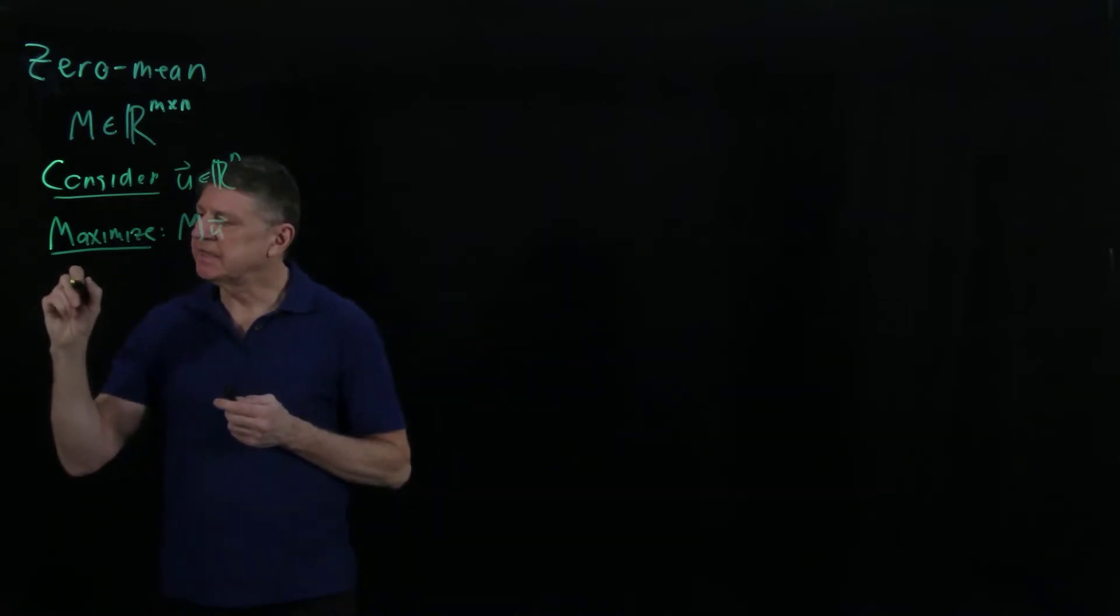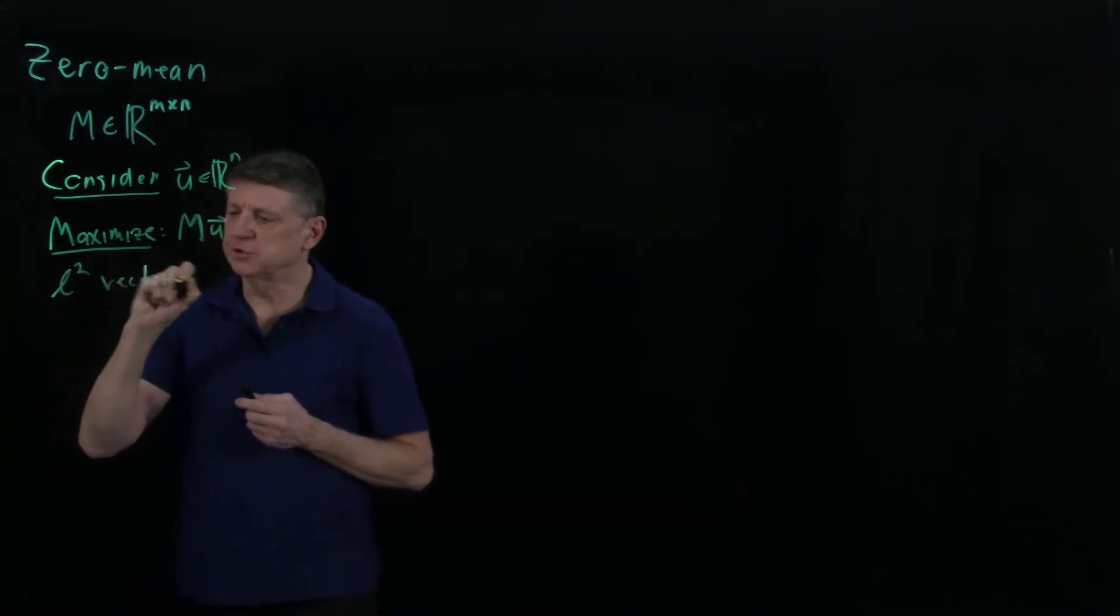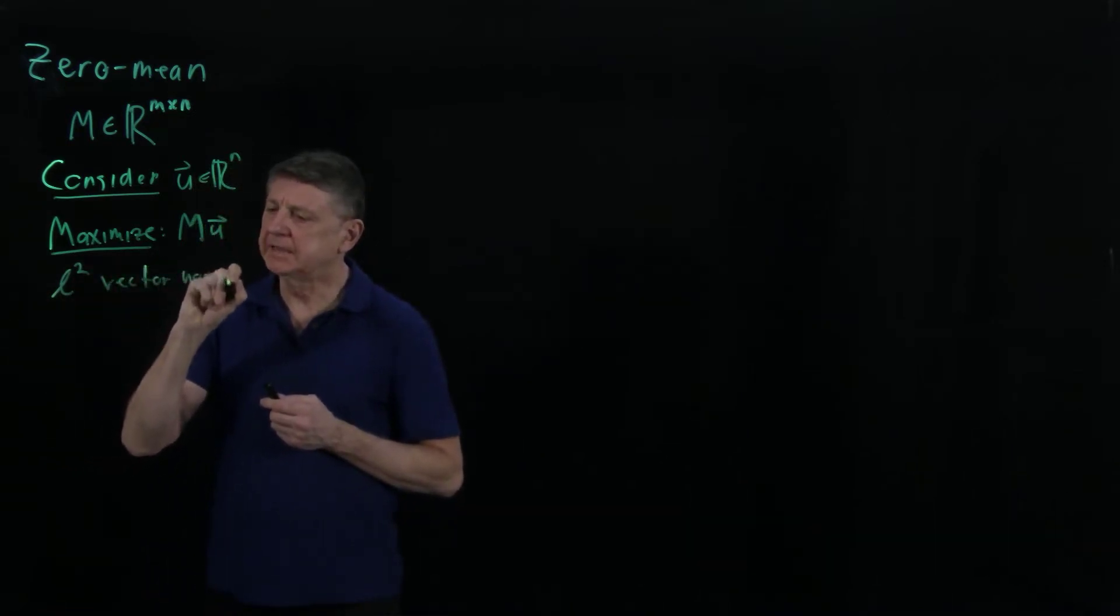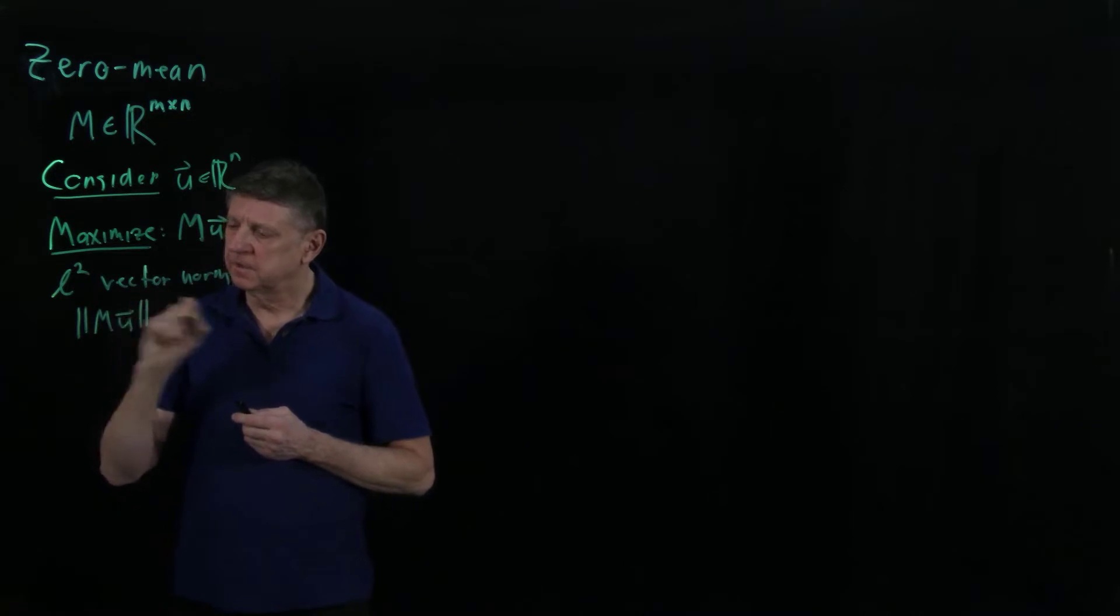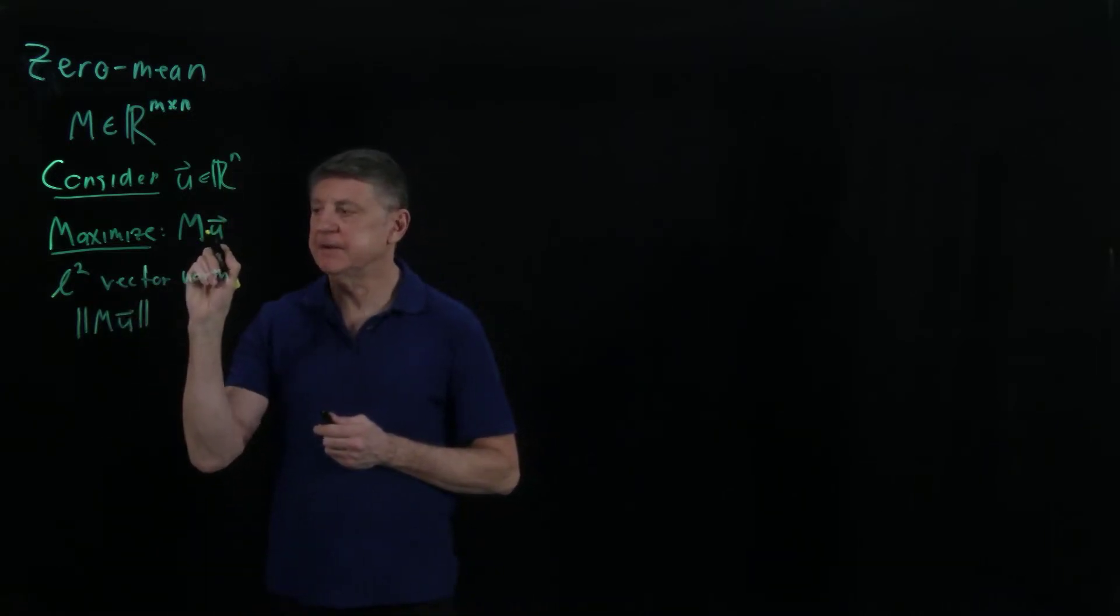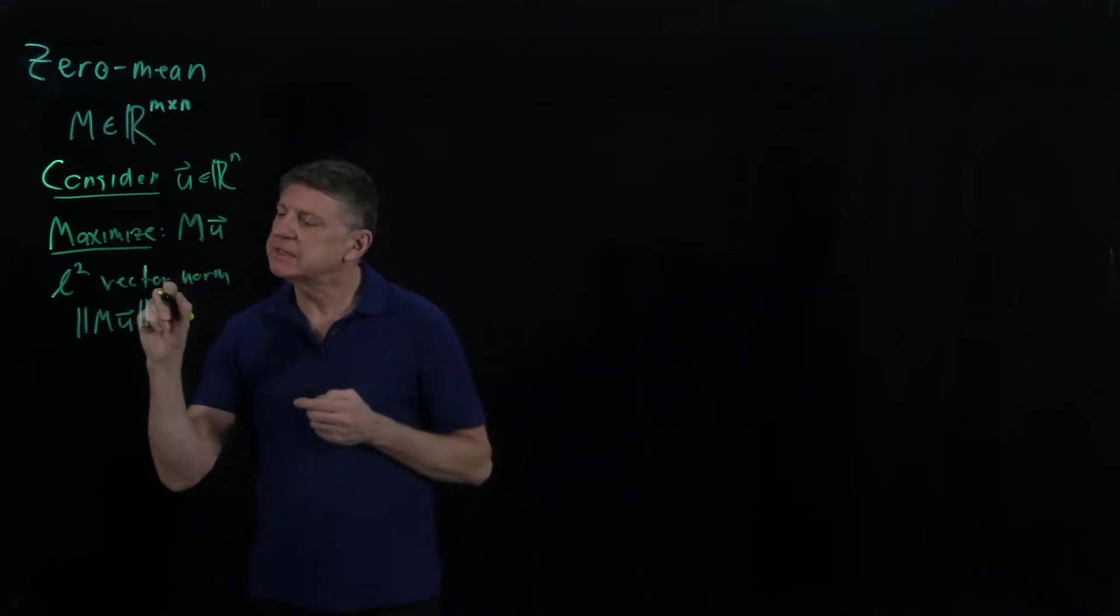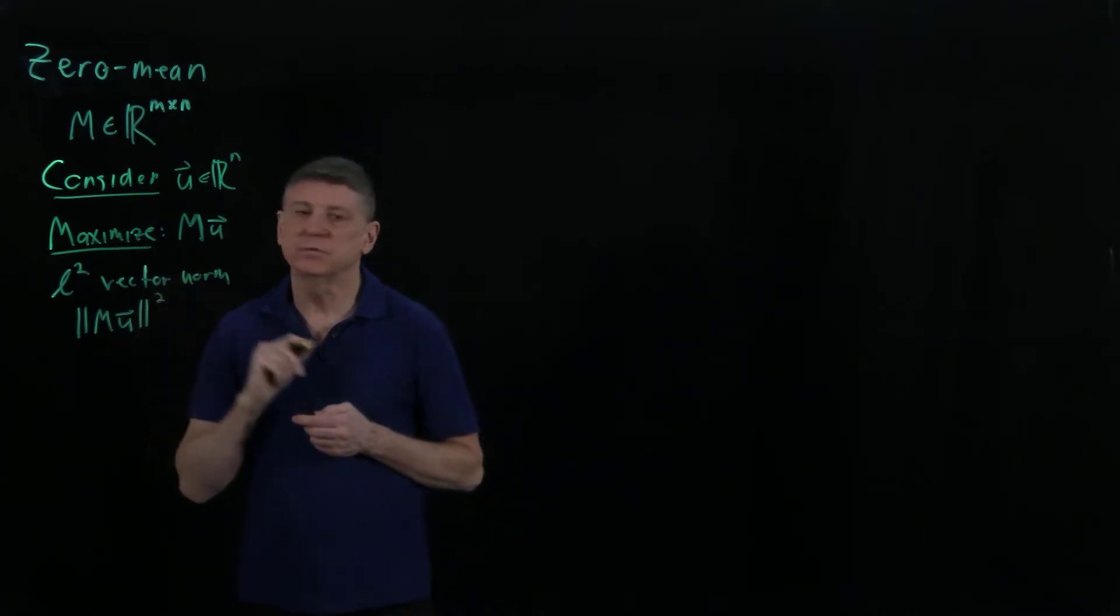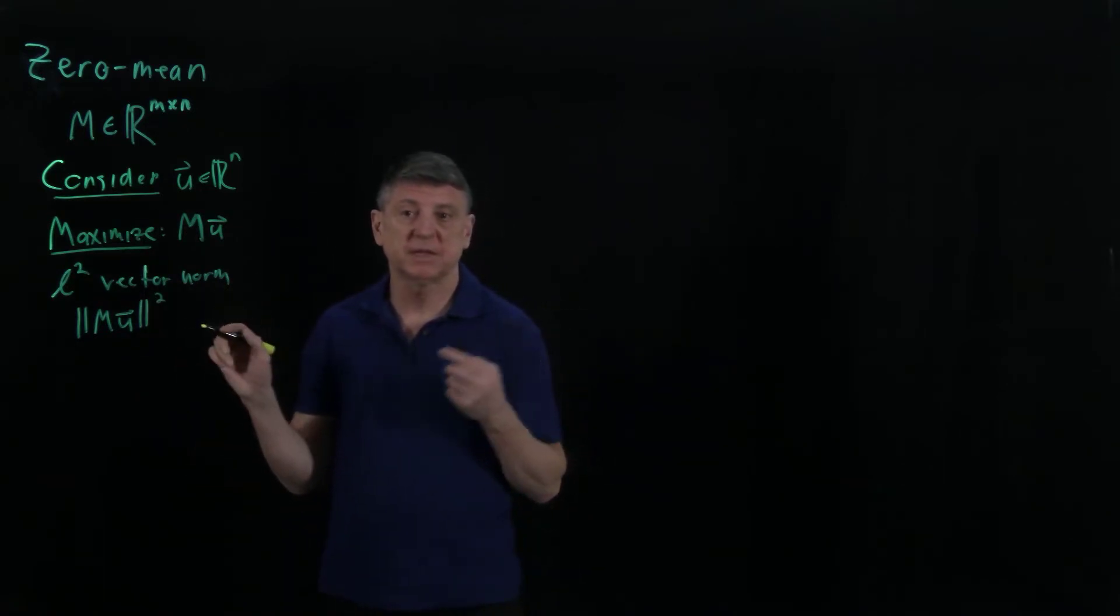Instead, let's maximize the L2 vector norm. Let's suppose we want to maximize the L2 norm of that. So instead of maximizing a vector, we'll maximize the norm. And to make it easier, let's maximize the square of the norm, because if we maximize a number and maximize the square of the number, we're going to end up at the same place.